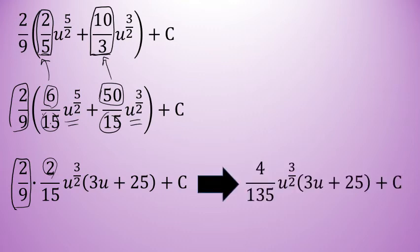And finally, I'll multiply 2 ninths times 2 fifteenths to get 4 over 135 u to the 3 halves times the quantity of 3u plus 25. And of course, anytime we do an indefinite integral, we can't forget about the plus c. Now, this is in simplest form in terms of u, but we're not done yet.